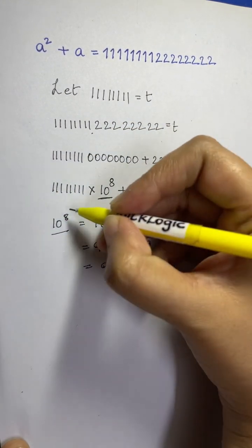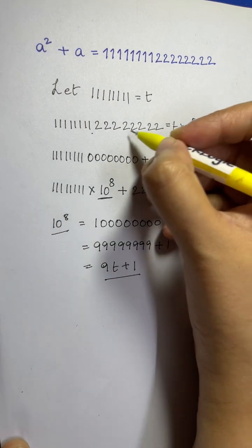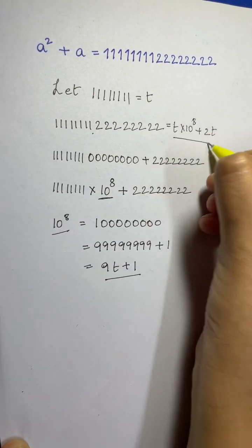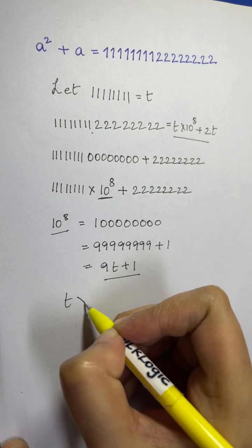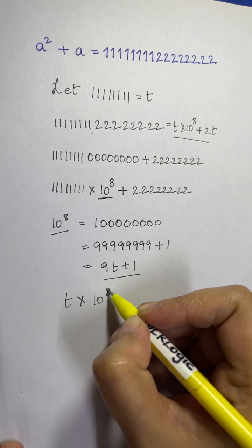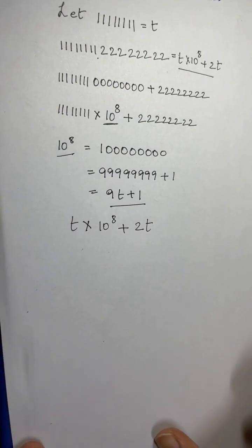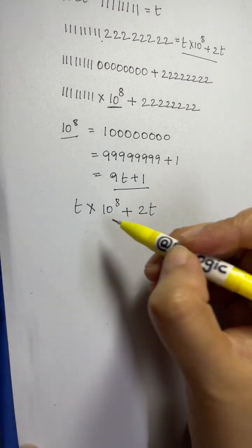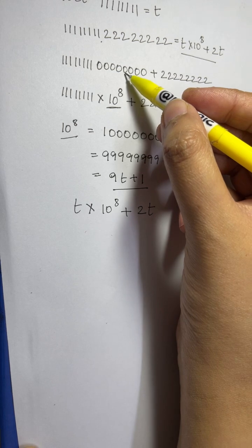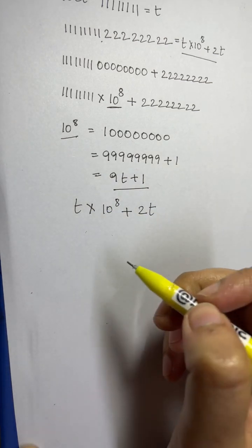So the right-hand side becomes t × 10^8 plus 2t. I'm going to write that: t × 10^8 plus 2t. You have t plus 10t times 10^8 plus 2t — that is our equation.